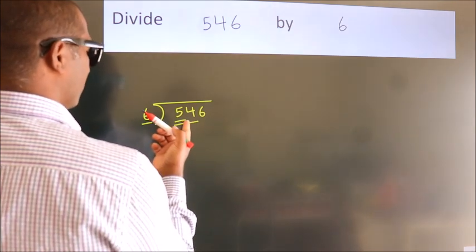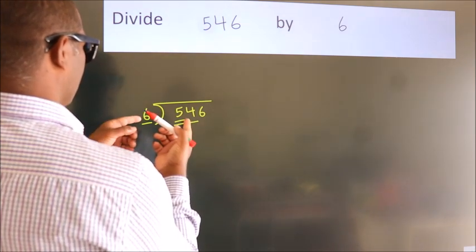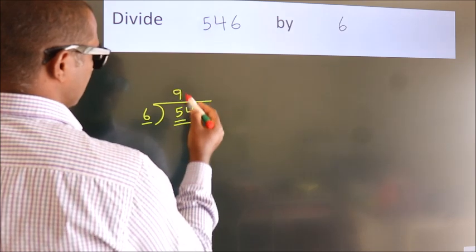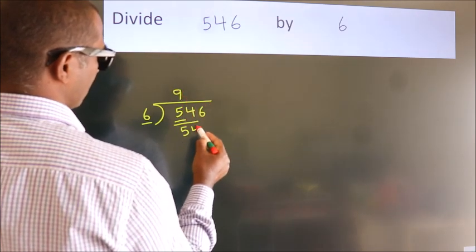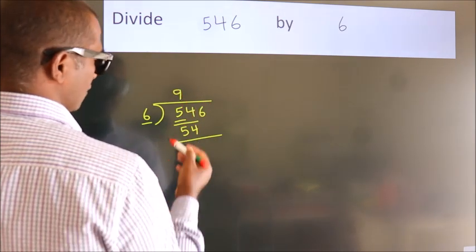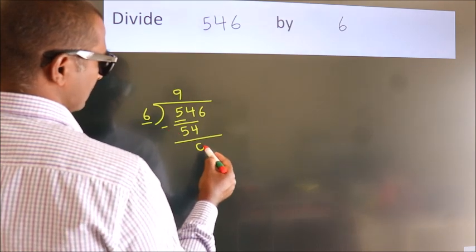When do we get 54 in the 6 table? 6 nines equal 54. Now we should subtract. We get 0.